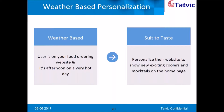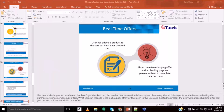Say a user from Delhi is visiting a food ordering website. It's afternoon and it's a very hot day. We can personalize the website and show them exciting coolers and mocktails on their home page. You can personalize the home page based on the weather information of those users.